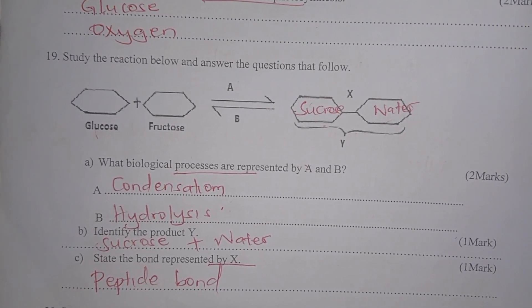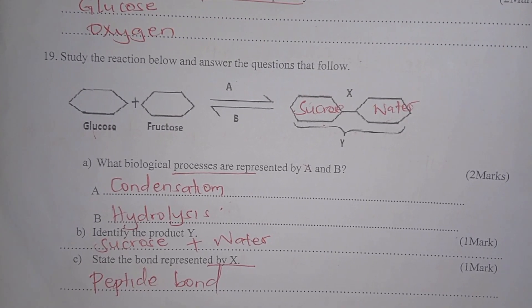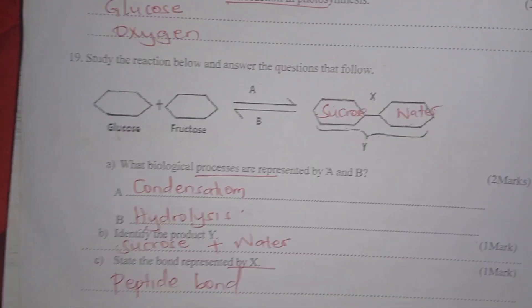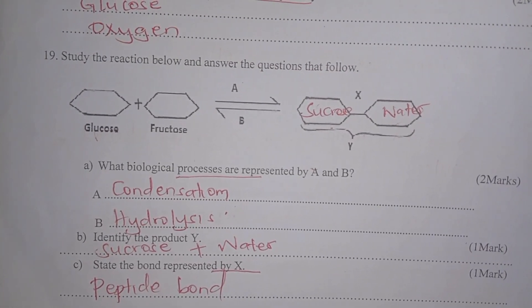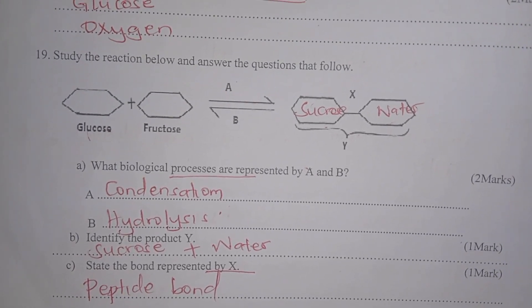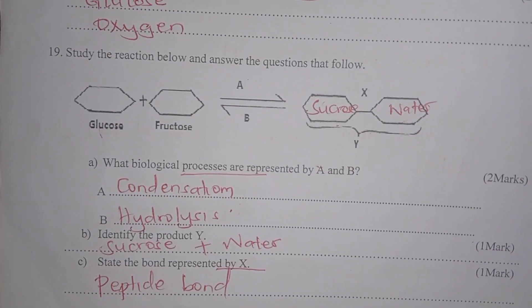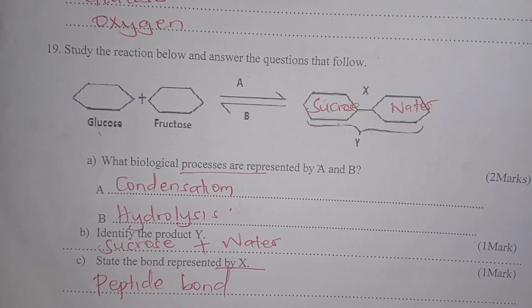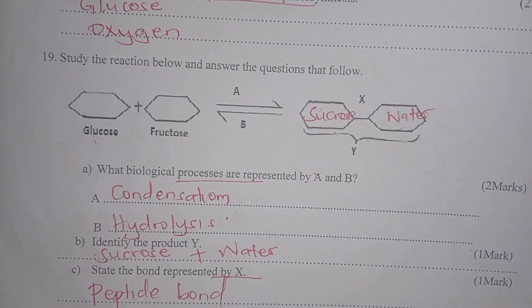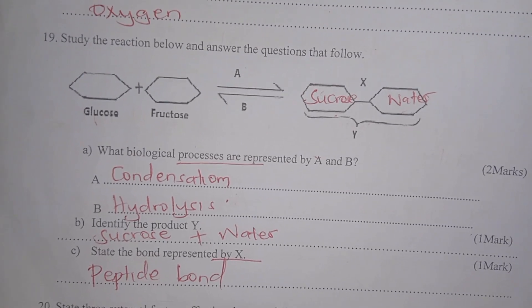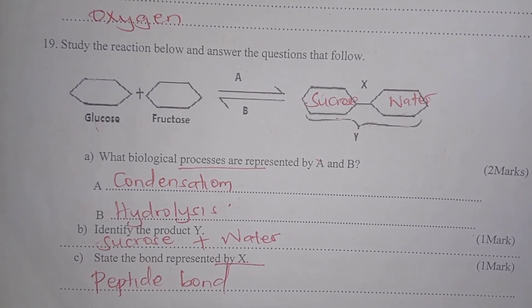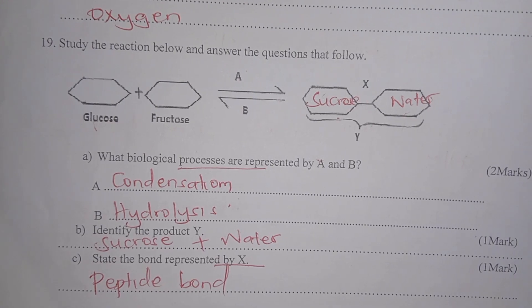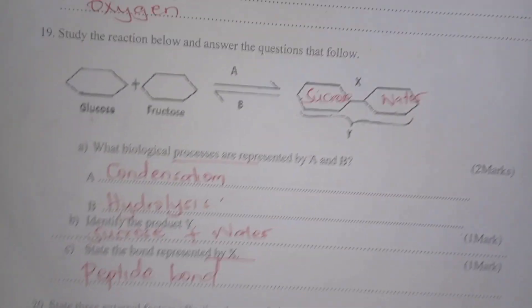Study the reaction: glucose plus fructose gives sucrose plus water. What biological processes are represented by A and B? A is condensation and B is hydrolysis — when water is added it goes back to fructose and glucose. Identify product Y — sucrose and water. The type of bond represented by X is a glycosidic bond.